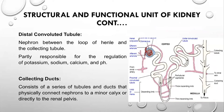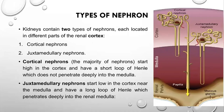The distal convoluted tubule lies between the loop of Henle and the collecting duct. It is partly responsible for the regulation of potassium, sodium, calcium, and maintaining the pH of the blood. The collecting duct consists of a series of tubules that physically connect nephrons to the minor calyx or directly into the renal pelvis, where urine is collected from each nephron.